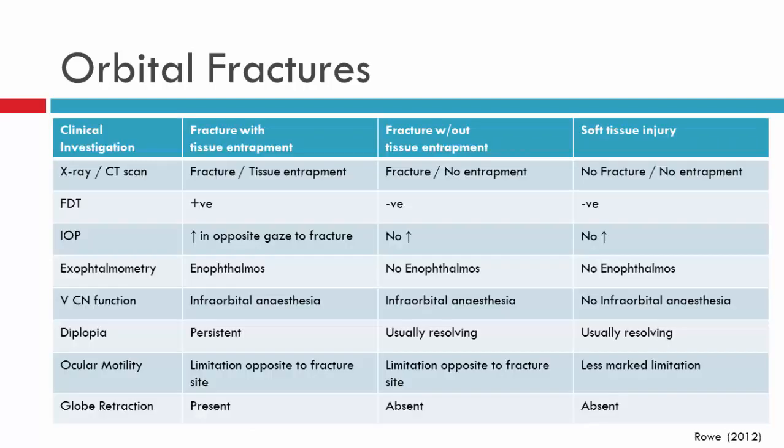Finally, I want to draw attention to a table from Roe's textbook, which provides a differential diagnosis between soft tissue injury, fracture with tissue entrapment, and fracture without tissue entrapment. In essence, with soft tissue injury, the limited eye movements are not due to the mechanical restrictions seen in the other conditions — they don't show positive forced duction tests, don't have increases in IOP, and enophthalmos doesn't occur. The soft tissue injury patient will not give you the clinical picture of a mechanical restriction.